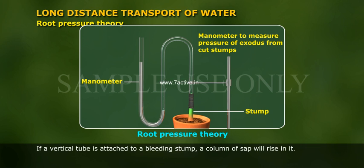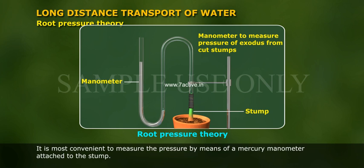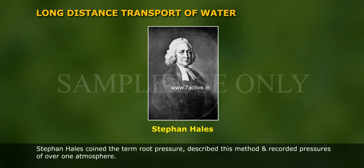If a vertical tube is attached to a bleeding stump, a column of sap will rise in it. It is most convenient to measure the pressure by means of a mercury manometer attached to the stump. Stephen Hales coined the term root pressure, described this method, and recorded pressures of over one atmosphere.